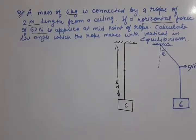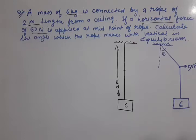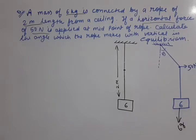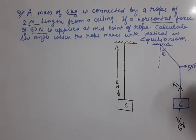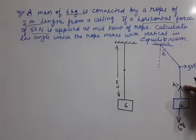Let us first show all the forces which can be present in this diagram. First, let us focus on the 6 kg mass. On this 6 kg, one force will be its weight Mg — that means 6g vertically downwards. The second force is tension, because the rope is present. So tension is towards the fixed support, and I call this tension T1. So on this 6 kg there are two forces: T1 and 6g.